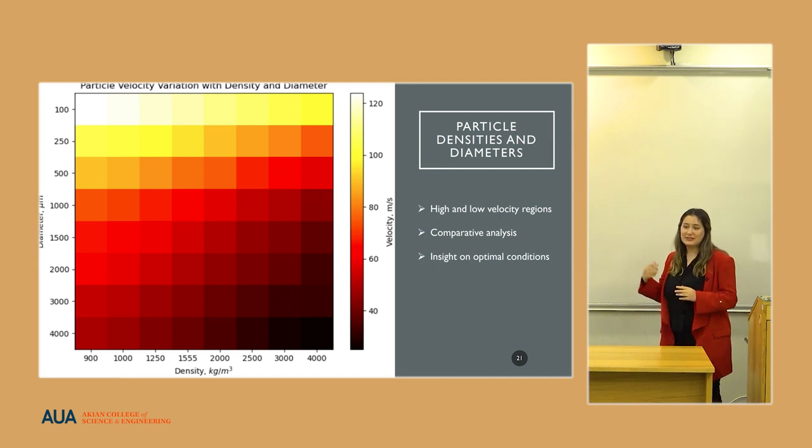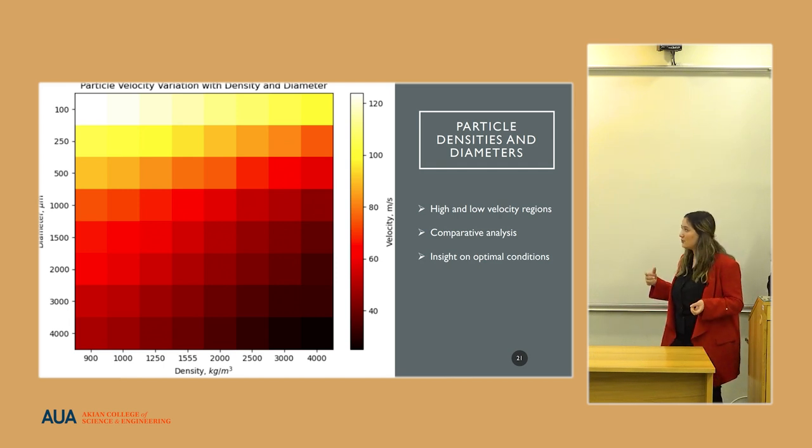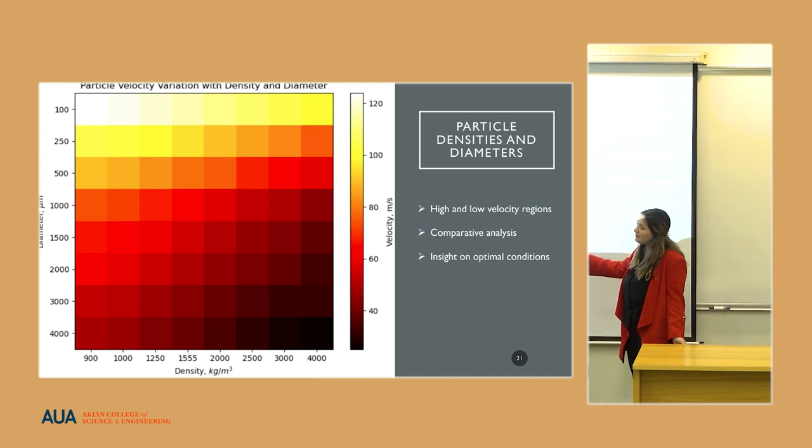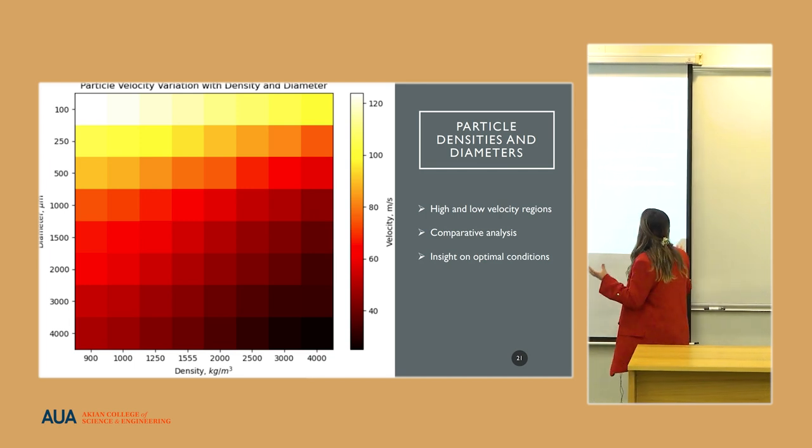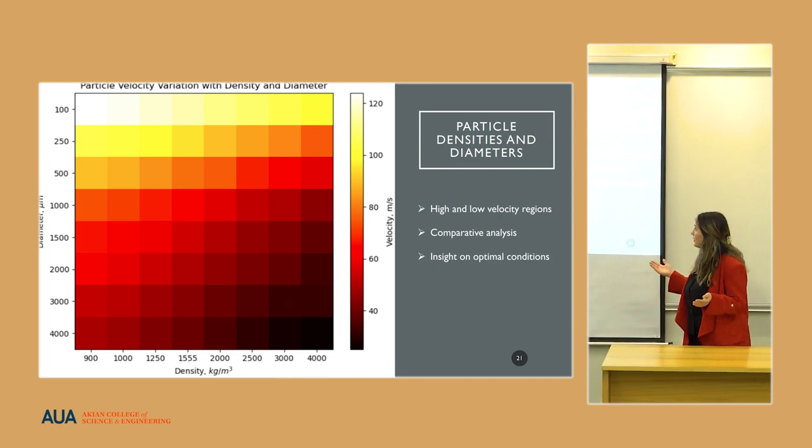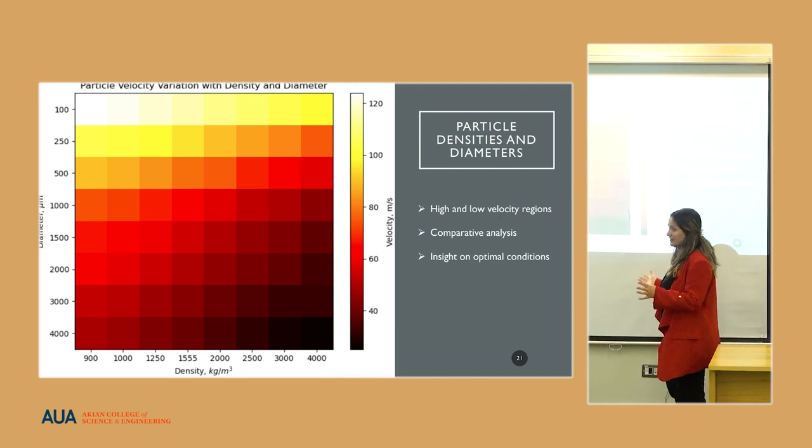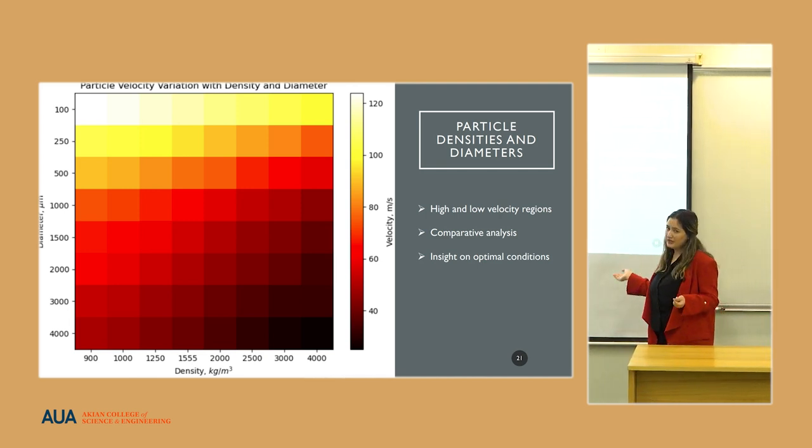At least these two gave us insights of how these two affect each other, but we needed to understand how their relationship is and how they affect the velocity more accurately. We conducted an experiment for each pair of velocity and density. Here is the heatmap showing the data for the maximum velocities for each particle. This heatmap can give us an insight about our velocity regions. If we need some specific particle speed, we can see where the speed is higher and take particles from that range. Also, it gives us a comparative analysis to understand how velocity is dependent on each parameter.